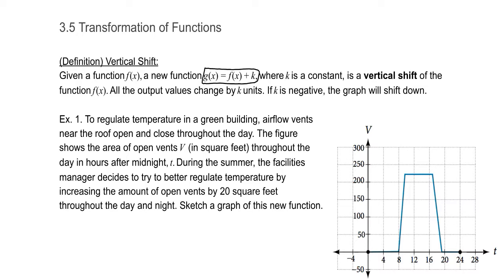The first type of transformation is the vertical shift. Given a function f of x, a new function g of x equals f of x plus k, where k is a constant, is a vertical shift of f of x. All the output values change by k units. If k is negative, the graph shifts down. If it's positive, the output values increase; if negative, they decrease.